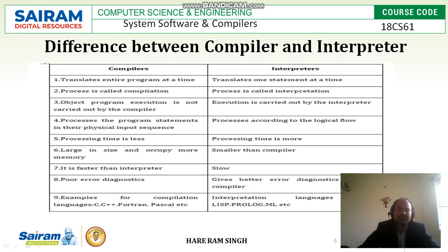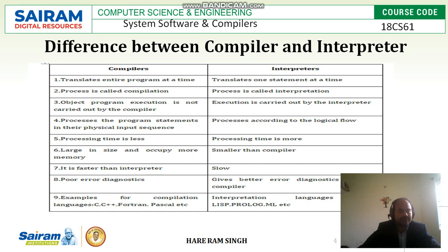Fourth difference: the compiler processes program statements in their physical input sequence, while the interpreter processes statements according to the logical flow. Fifth difference: the compiler's processing time is less — it is very fast, compiling the full set of programs at a time — whereas the interpreter's processing time is more because it interprets one statement at a time.